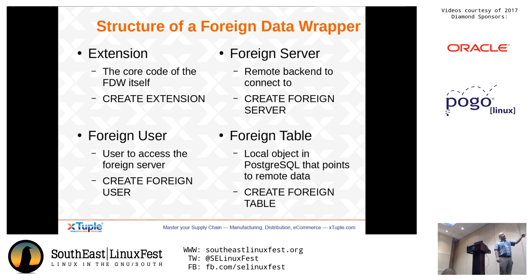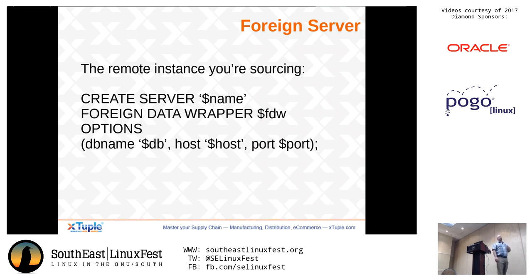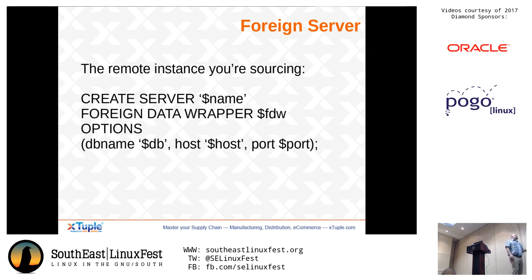The foreign server command is a declaration: I want to create a server with a given name, I want to say what foreign data wrapper I'm using — which could be the name of a Multicorn one, postgres_fdw, or the MySQL one — and then the options. For things like connecting to another Postgres server, the options are straightforward: db name, host, and port. But these options are exposed by whatever you're connecting to. For the MySQL FDW it's host, username, password, port. For a file data wrapper, it's going to be the path for the file on disk.